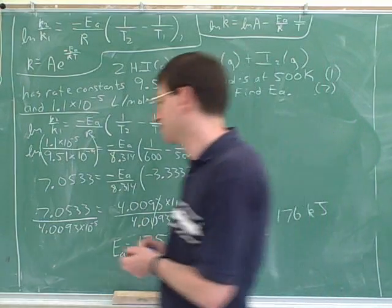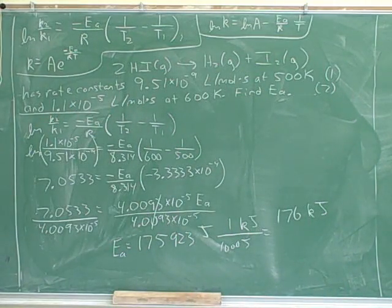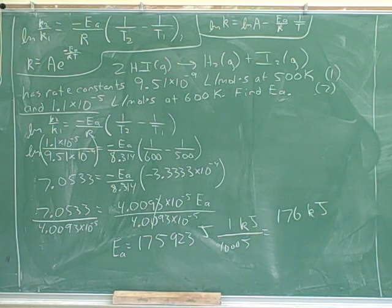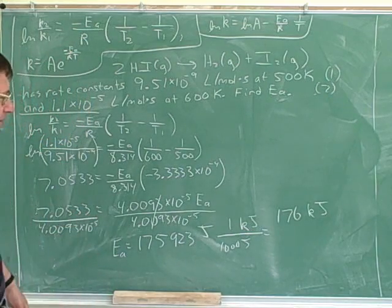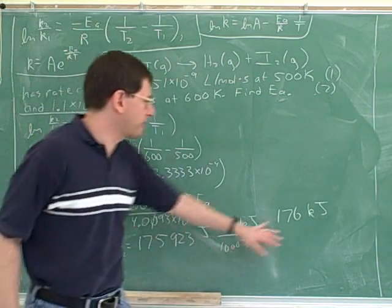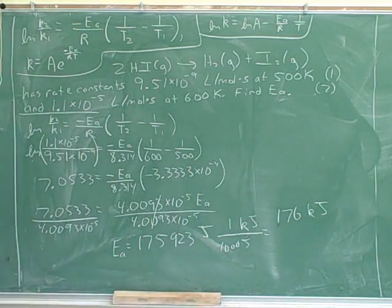That moves the decimal point over three places, giving you basically 176 kilojoules. We won't worry about the exact number of significant figures, so this is about 176 kilojoules.